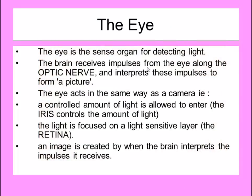The eye is the sense organ for detecting light, and the brain receives impulses from the eye along the optic nerve — one optic nerve from the back of each eye — and interprets these electrical impulses to form a picture. Our eye acts in a very similar way to a camera: it allows a controlled amount of light to enter using the iris, and it focuses light onto a light-sensitive layer. The retina is very similar in function to the light-sensitive cells at the back of a digital camera.